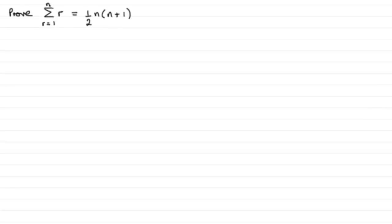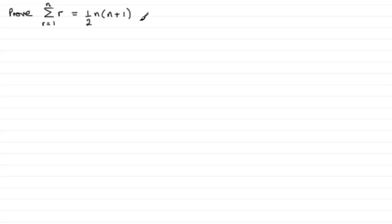Welcome to this tutorial on proof by mathematical induction. I'm going to show you how we can use this rule to prove this particular summation: Sigma of r going from 1 to n of r, and we've got to show that equals half of n, all multiplied by n plus 1.